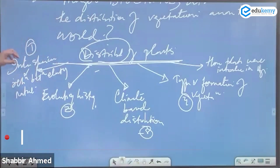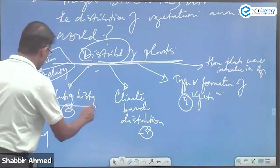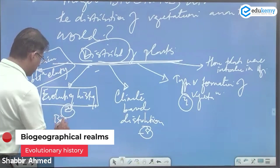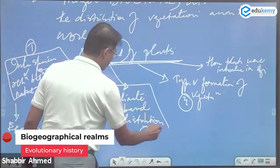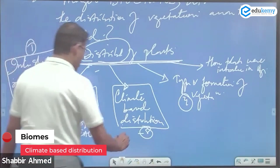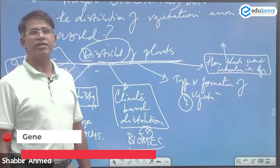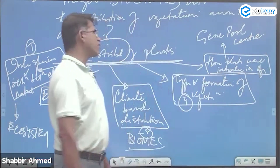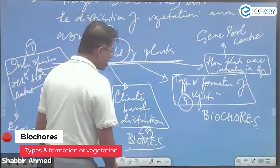Distribution in terms of inter-species relationships and between the elements of nature — this is the ecosystem approach. Study in terms of evolutionary history — this is biogeographical REMS, covering plant kingdoms and animal kingdoms. Studying plants in relationship to climates — this is biomes. Studying gene pool centers — this relates to introduction into agriculture.